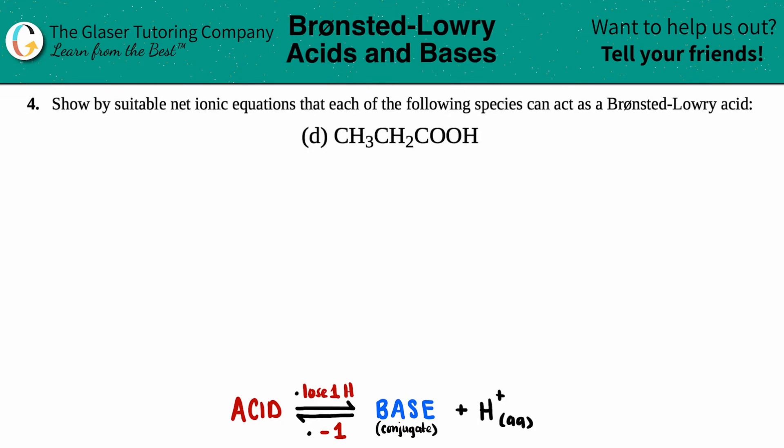Number four, show by suitable net ionic equations that each of the following species can act as a Bronsted-Lowry acid, and then we have letter D. So in this case, we have to figure out how to write a net ionic equation for CH3CH2COOH as a Bronsted-Lowry acid.